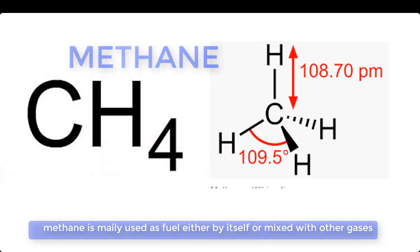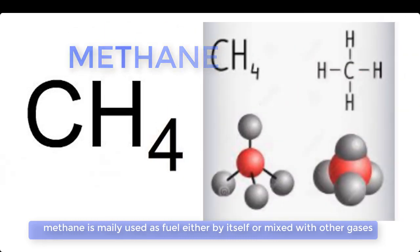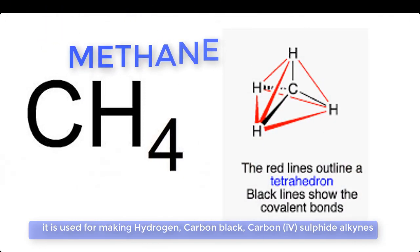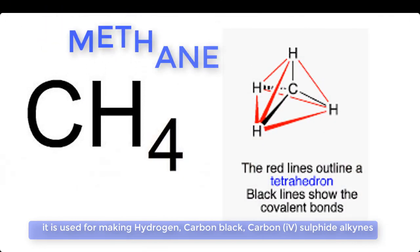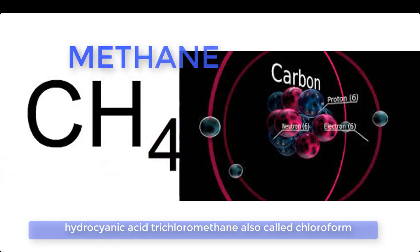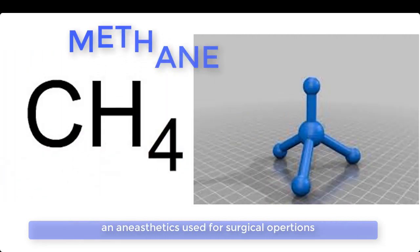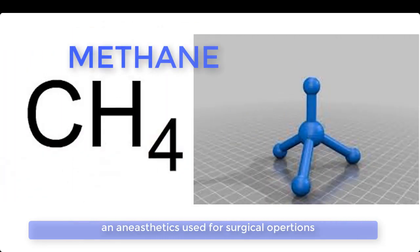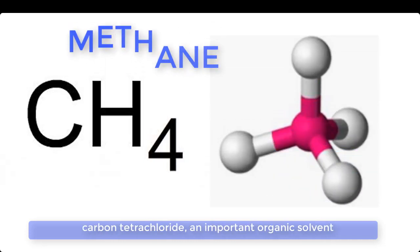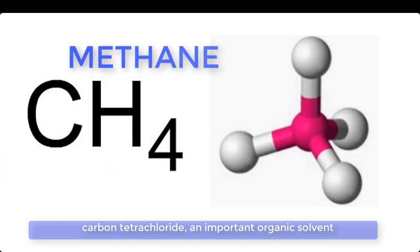Methane is mainly used as fuel, either by itself or mixed with other gases. It is used for making hydrogen, carbon black, carbon disulfide, alkynes, hydrocyanic acid, trichloromethane (also called chloroform, an anaesthetic used for surgical operations), and tetrachloromethane (also called carbon tetrachloride), an important organic solvent.